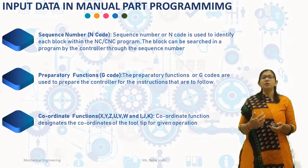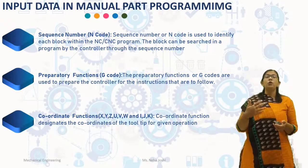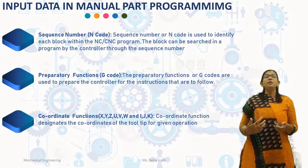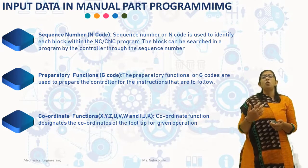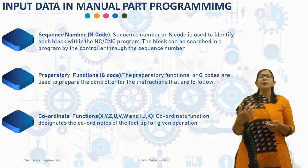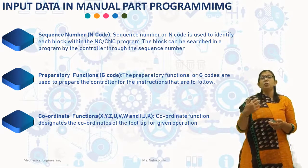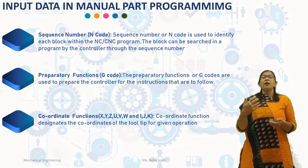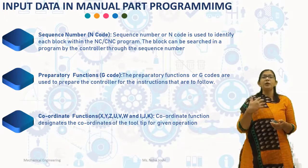The third is coordinate functions. Generally, X, Y, Z, U, V, W, and I, J, K are used for coordinate functions. Coordinate functions designate the coordinates of the tool tip for a given operation. The coordinates are specified using the word addresses X, Y, Z, U, V, W, and I, J, K. For example, if the tool tip coordinate is 12525, it is represented as X coordinate 100 and Y coordinate 25.